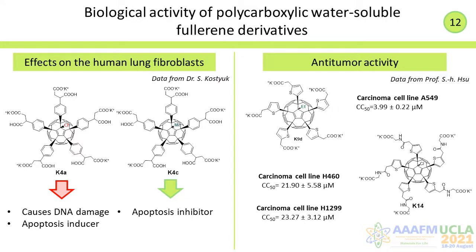It was also shown that even small modifications of the chemical structure of the fullerene derivative changed their effects on human lung fibroblasts. The compound with five aromatic addons and a chlorine atom attached to the cage caused DNA damage and induced apoptosis, while the compound with a methyl radical on the contrary inhibited apoptosis. Also, fullerene derivatives with thiophen-based solubilizing addons demonstrated antitumor activity for three different carcinoma cell lines.